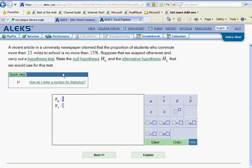It says a recent article in a university newspaper claimed, there's a keyword, that the proportion of students who commute more than 15 miles to school is no more than 15%. Now suppose that we suspect otherwise, and we wish to carry out a hypothesis test.